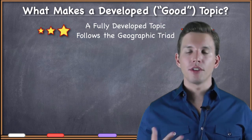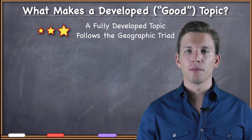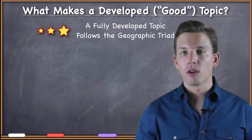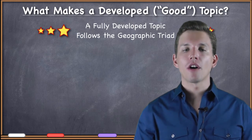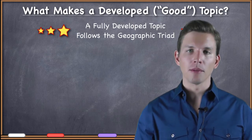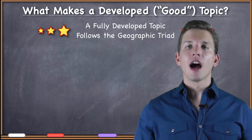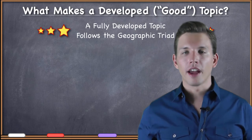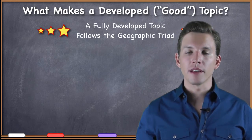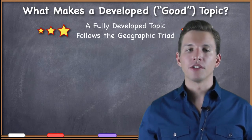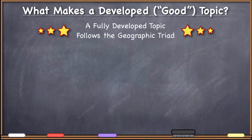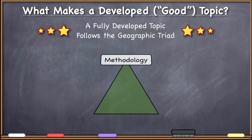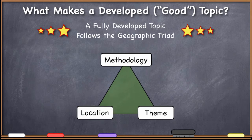I'm not going to go over it in full detail here, but I want to briefly summarize it so you know how it relates to topic development. The geographic triad is: methodology, location, and theme.